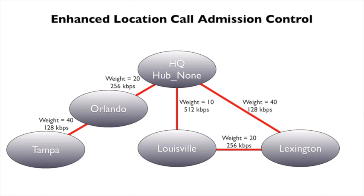Now, in Communications Manager version 9, we have enhanced location CAC. We can go into Communications Manager and accurately model our entire topology. Not only can we specify bandwidth amounts for each link, we can assign a weighting to each link in the range of 0 through 100. This works a lot like a routing protocol. For example, the link from HQ to Lexington has a direct link with a weight of 40, but it would be more efficient to go from HQ to Louisville to Lexington — weights of 10 plus 20, totaling 30. That becomes the effective path with enhanced location CAC.